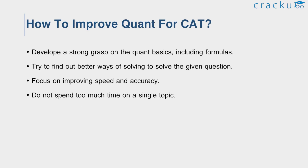Let us see how to improve your score in the Quant section. Quant is a section where one can score higher than in the other sections in the CAT exam and plays a vital role. To score high in this section, having a solid grasp of basics including formulas is necessary — without solid fundamentals, one cannot ace this section. Try to find better ways of solving questions, because simpler solving methods save valuable time in the two-hour exam. Focus on improving speed and accuracy, mainly accuracy, because there is no point in solving more problems very fast but inaccurately. Do not spend too much time on a single topic.